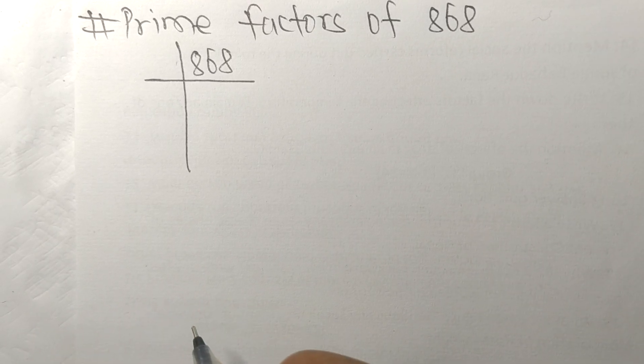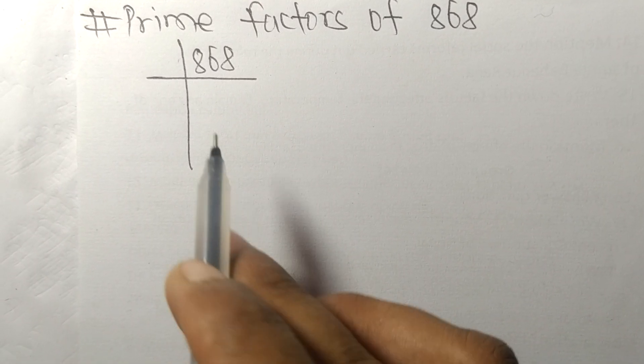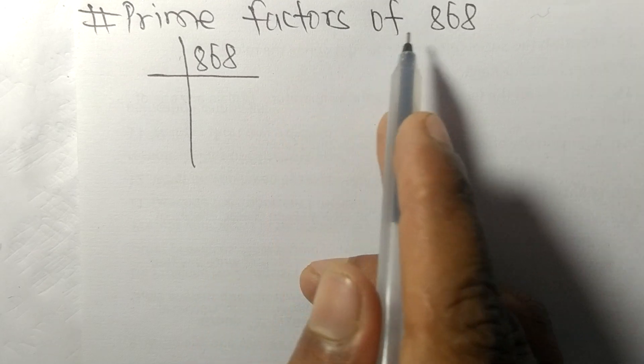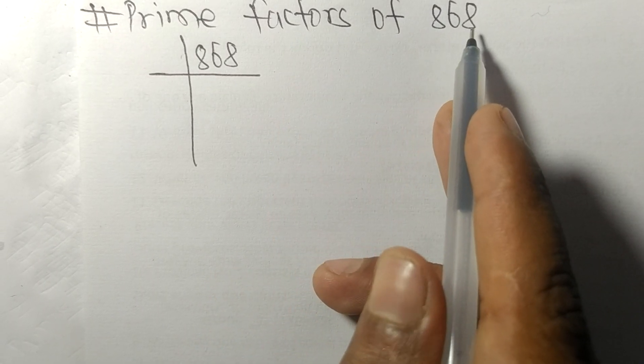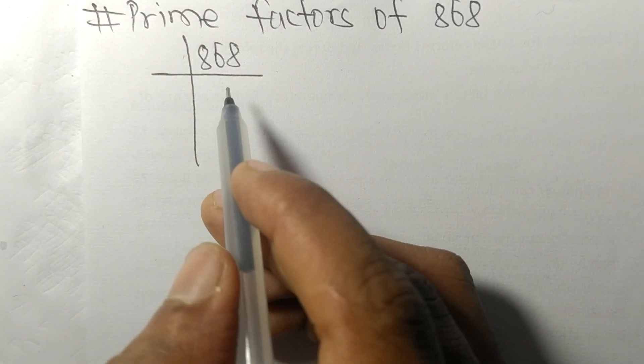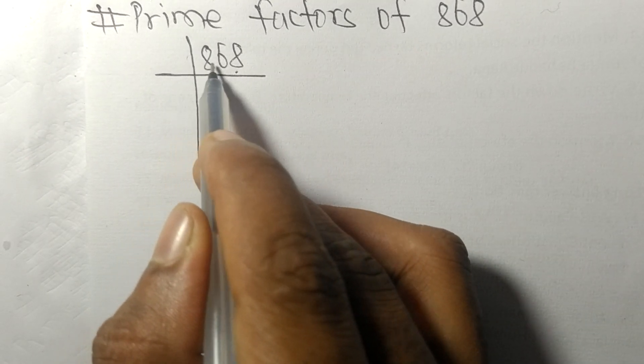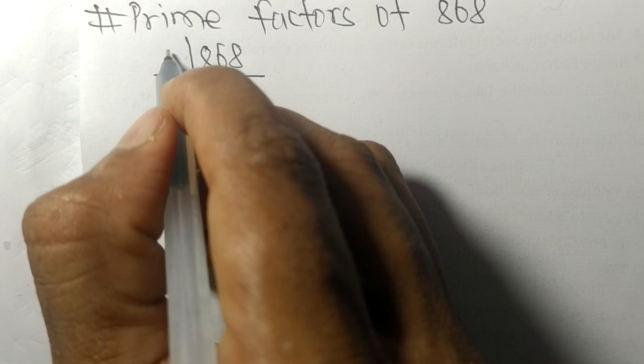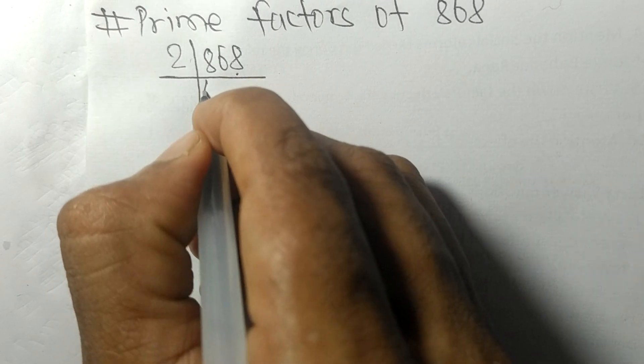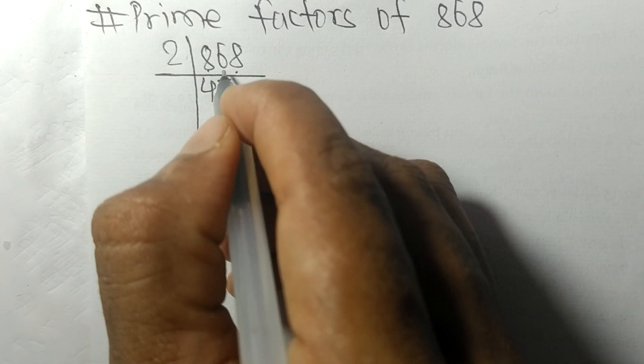So today in this video we shall learn to find the prime factors of 868. At last it contains an even number 8, so this whole number is divisible by 2. 2 times 4 means 8, 2 times 3 means 6.